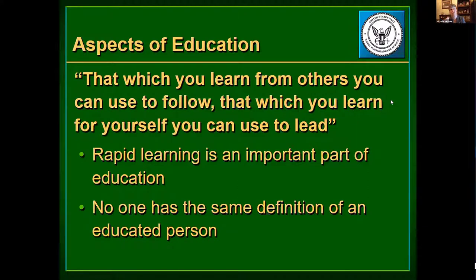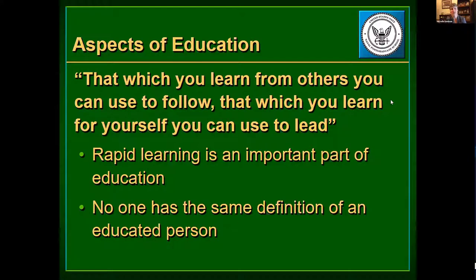Hamming also points out that with computer-aided instruction, students can learn things at their own pace. His counterpoint is: don't we want people to be able to think quickly? Especially leaders in the military — would you rather have a slow learner or a fast learner working for you? There's some goodness in making students learn rapidly. Compounding the problem is the question of what an educated person even is. Hamming states that an educated person in 2020 is not the same as an educated person in 1995 — the definition changes over time.